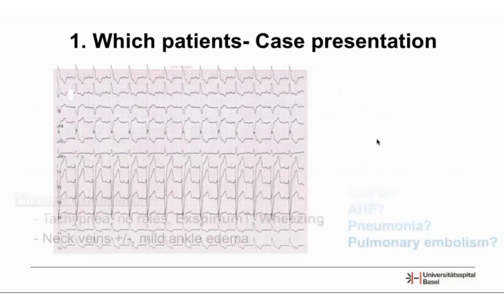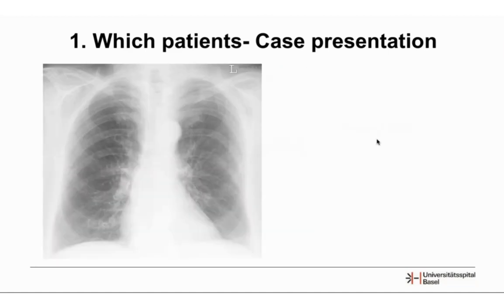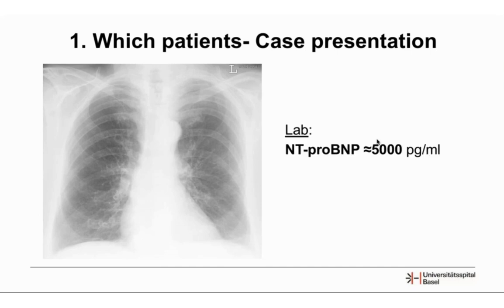The ECG showed sinus rhythm and a known left bundle branch block — nothing new, no signs of acute ischemia. The chest x-ray showed no infiltrate, making pneumonia less likely, but we did see mild signs of congestion. We therefore ordered an NT-proBNP, which came back at 5,000. This led us to the most likely diagnosis of acute heart failure, and the patient was admitted to the ward with that diagnosis.